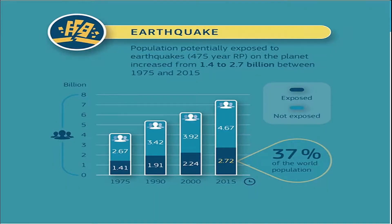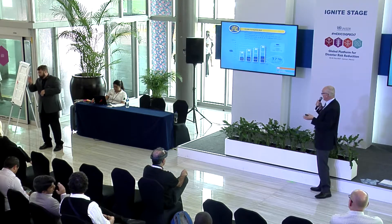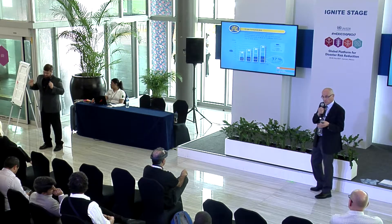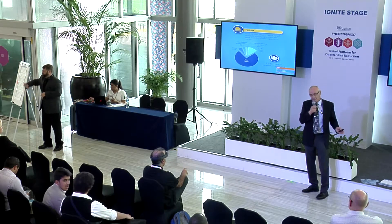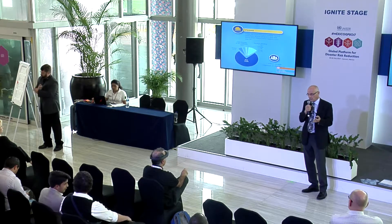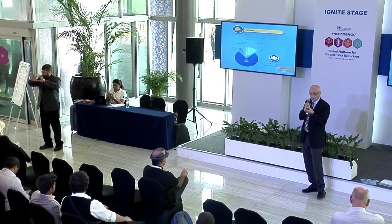That report tells you, for example, that now about 37% of the population — 2.72 billion people — are exposed to earthquake risk, while in 1974 only 1.41 billion were exposed. We also have statistics for floods: about 1 billion people are exposed to flood risk, most in Asia. Our analysis is global and continental, but if you want to replicate it at your local level, feel free to do so.